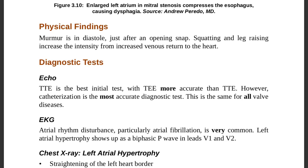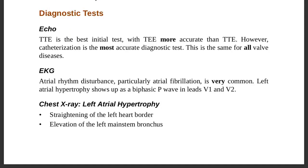On ECG/EKG, atrial rhythm disturbances are seen — particularly atrial fibrillation, which is very common. Left atrial hypertrophy shows up as a biphasic P-wave in leads V1 and V2. Because of high pressure from the stenosed mitral valve, the left atrium undergoes hypertrophy, manifesting as a biphasic P-wave in V1 and V2.